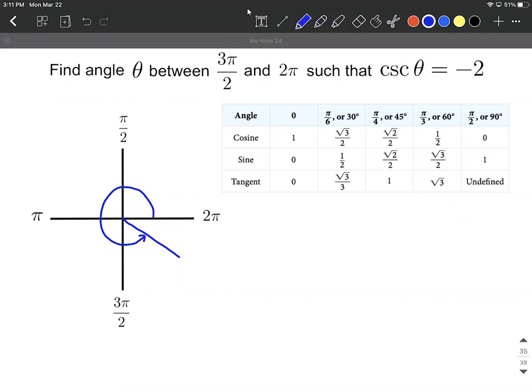Well cosecant is the reciprocal of sine. So we can say that means sine of theta—that's negative two over one, the reciprocal here would be negative one half.